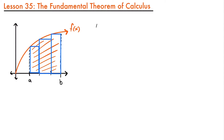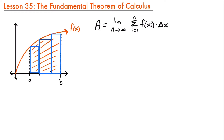That gave us the formula that the area of that region is equal to the limit as n, the number of rectangles, approaches infinity of the sum from i equals 1 to n of the height of our rectangles f of x sub i, times the width delta x. This is the formula for the limit definition of the area under the curve that allowed us to find the actual area of that region.